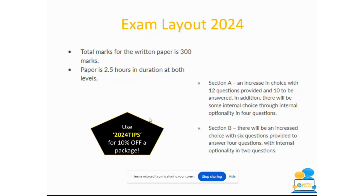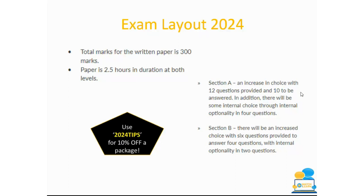Your paper is going to be split into two sections: Section A and Section B. Section A — there's going to be an increase in choice this year. Some of these changes came in due to COVID. There's going to be 12 questions provided and you then have to answer 10. In addition, there will be some internal choice through internal options in four of those questions. So lots of choice and lots of options.